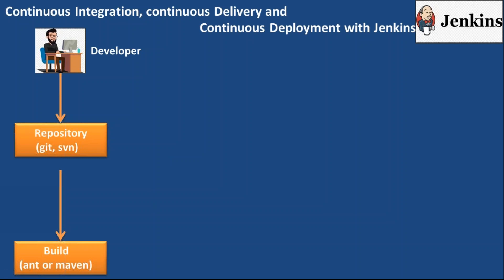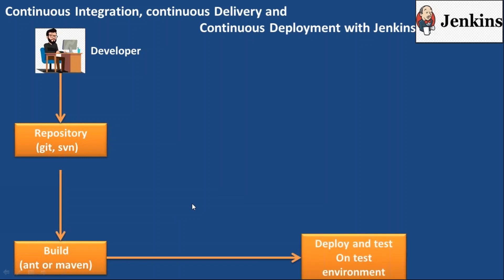The output of the build tool is an application — for example, a WAR file. Once we get the WAR application, we deploy it first into a test environment and test it. If it is successful, we then go and deploy it into production. Now if you observe this SDLC process, each and every step is a manual step, so it takes some time.